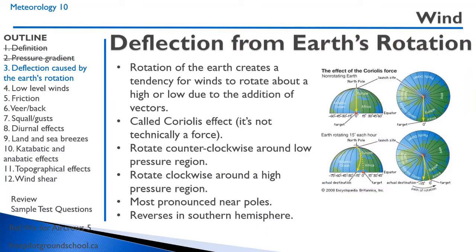We just discussed that wind travels from high pressure regions to low pressure regions, but because of the Earth's rotation, it doesn't go directly there — it actually goes at an angle. This is called the Coriolis force. It's technically not a true force; it's an apparent force, kind of like centrifugal force.